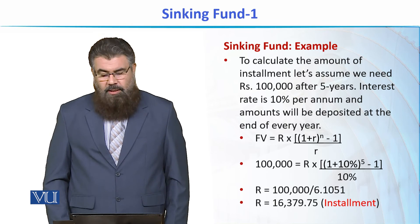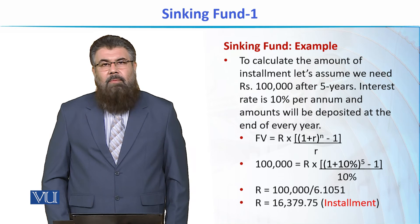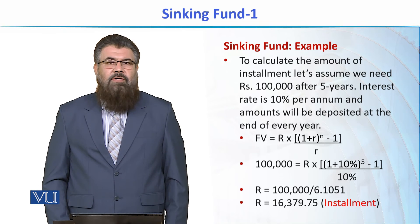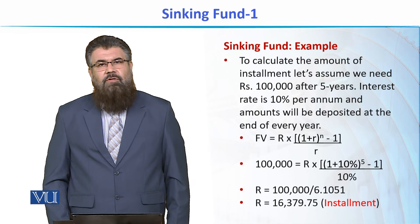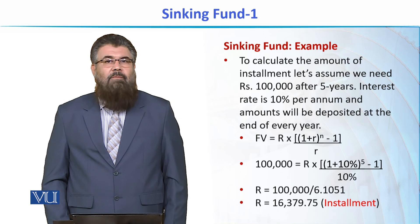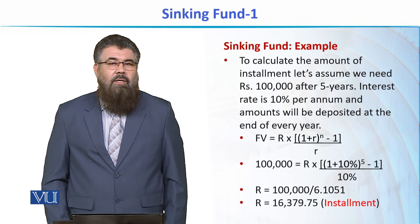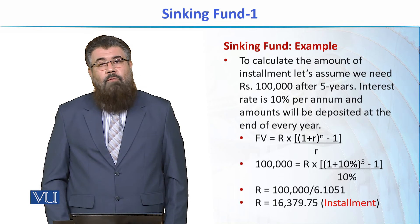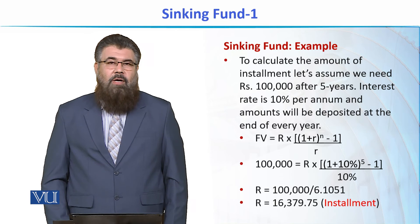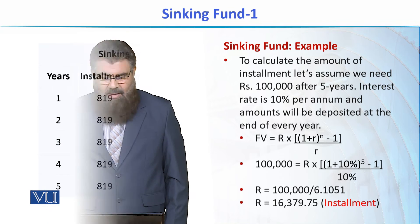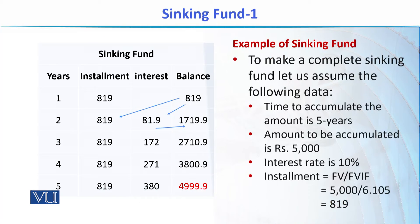If someone multiplies the installment amount of 16,379.75 by 5, the total of the 5 installments will be less than 100,000 rupees, because the remaining amount is the interest that we earn on the deposit each year.